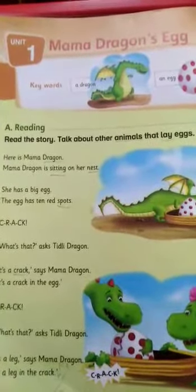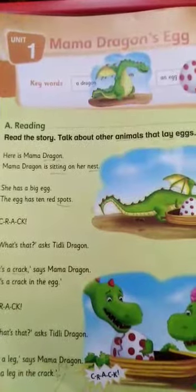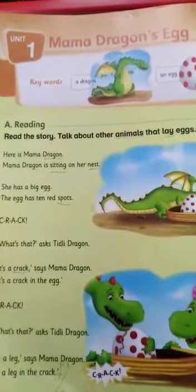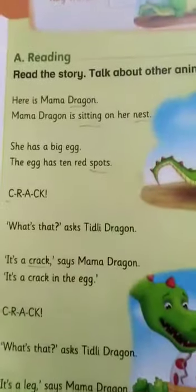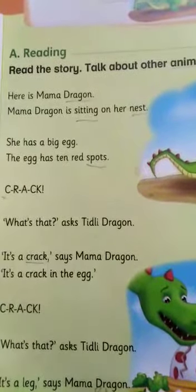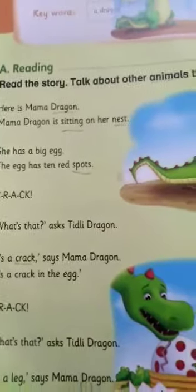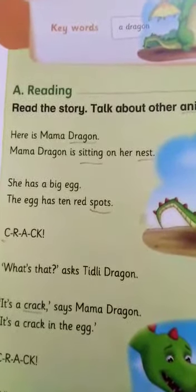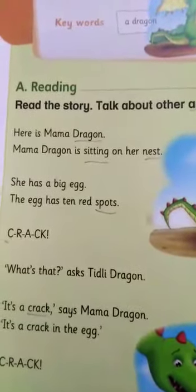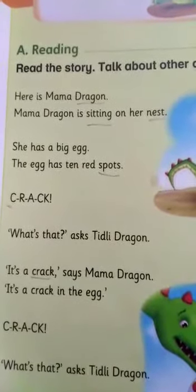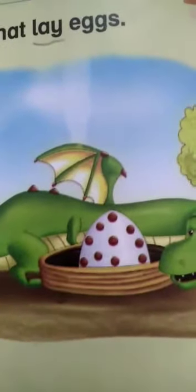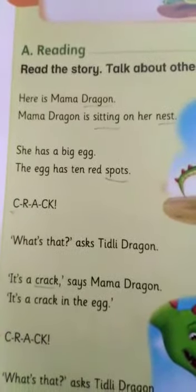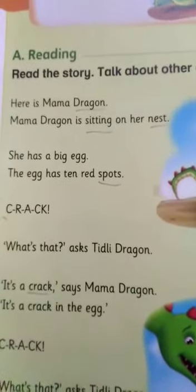Reading: read the story. Talk about the animals that lay eggs — this is the main component of the lesson, which animals can give eggs and which cannot. Here is Mama Dragon. Mama Dragon is sitting on her nest — 'nest' means 'ghosla,' sitting on it. She has a big egg. The egg has ten red spots.